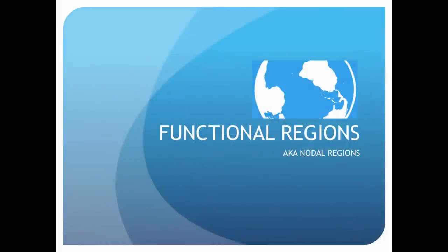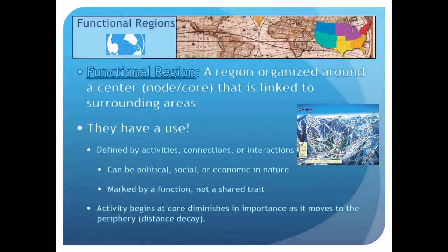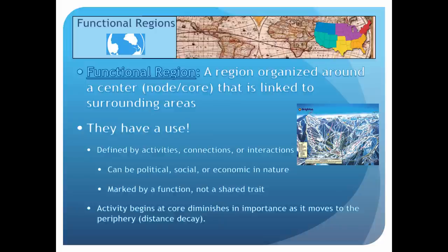The next type of region is called a functional region, also sometimes called a nodal region. A functional region is organized around a center — otherwise known as a node or core — that is linked to surrounding areas. In simpler terms, it is a central place and the surrounding areas affected by it. Functional regions are defined by activities, connections, and interactions. They begin in the core and become less important the further you travel from the node — an example of distance decay. The area where the trait begins to disappear is called the periphery, which is why boundaries of functional regions are often fuzzy and less defined than formal regions.